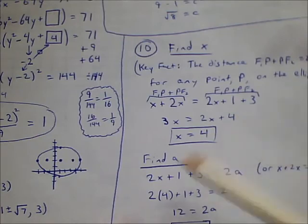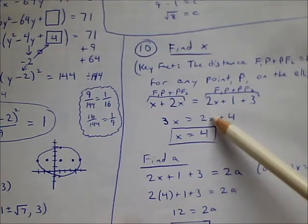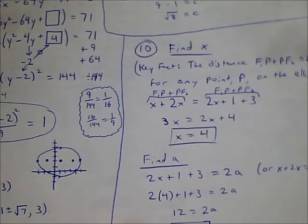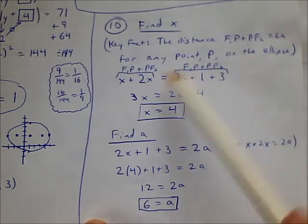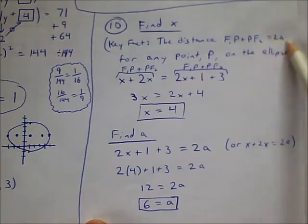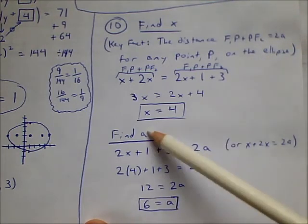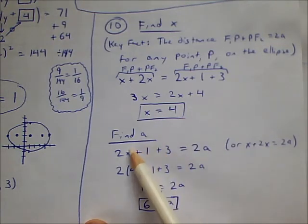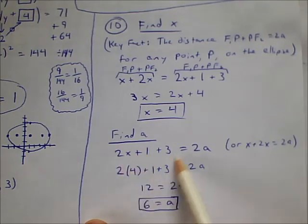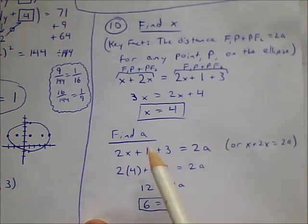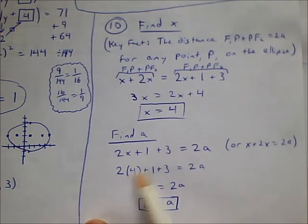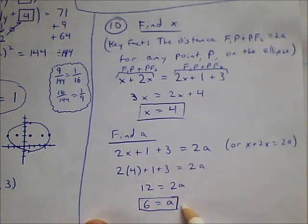Setting the two paths equal, combine like terms: 3x equals 2x + 4. Subtract 2x, and x equals 4. Now, to find A, recall that the total distance from focus to point to focus always equals 2A. Plug x = 4 into either distance expression — using 2x + 1 + 3, that gives 8 + 1 + 3 = 12. Set that equal to 2A and divide by 2: A equals 6.